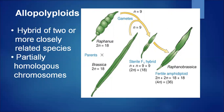In allopolyploidy, hybrids of two or more closely related or distinctly different species are taken. Partially homologous chromosomes take part in this. The example Raphanus-Brassica is an example of amphidiploidy.